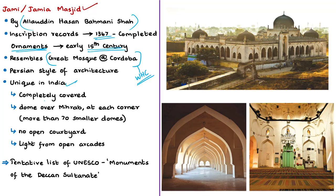The Gulbarga Jamiya Mosque is unique in India. It is completely covered and has a dome over the mihrab — the niche in the wall indicating the direction of Mecca towards which all Muslims pray. There are domes at each corner, and the mosque has more than 70 similar domes. It has no open courtyard, and all the light comes from the arcades. The central area, which would normally be an open courtyard, is covered with numerous small domes, and three of the outer walls are made up of open arcades. That is why this mosque is unique in India.